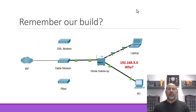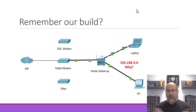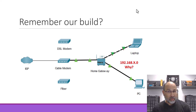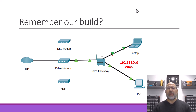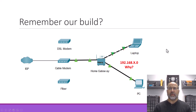So first up, let's remember our build. We are talking about a home network, and you can be behind any kind of modem for this discussion. The really important feature is that we've got a home gateway in here, whether it's a wireless home gateway, a Linksys, a D-Link, a Belkin — it doesn't really matter.